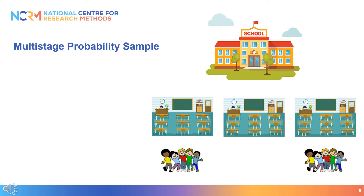Another example would be randomly selecting schools, and then randomly selecting classes from within those schools, and then in a third step randomly selecting pupils from within those classes. The clusters at the first level of sampling are called the primary sampling units, or PSUs.